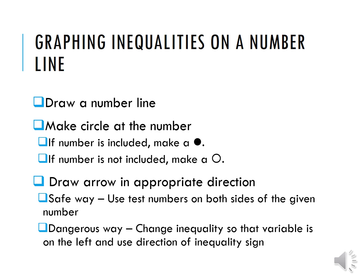Draw an arrow in the appropriate direction. The safe way to do that is to test numbers on both sides of the given number to see which side works. The dangerous way is to change the inequality so the variable is always on the left and use the direction of the inequality sign. I would recommend the safe way because then there are no mistakes being made with changing sides of the inequality.